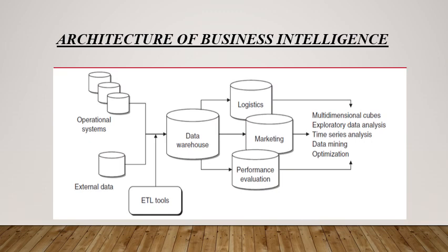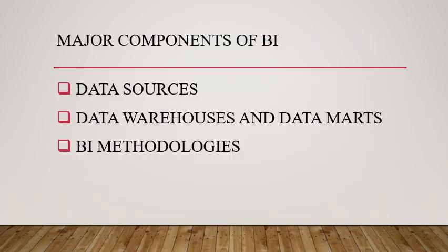Now we will see the architecture of business intelligence. This diagram is divided into three tiers: the first consists of operational systems and external data — external data can be from sources like the internet, books, etc. The second tier consists of a data warehouse, and the third tier consists of logistics, marketing, and performance evaluation. Here we have ETL tools — data can be extracted, transformed, and loaded from different sources. Business intelligence architecture consists of three major components: data sources, data warehouses and data marts, and BI methodologies.